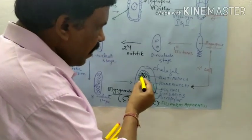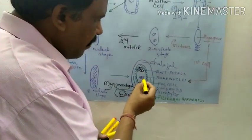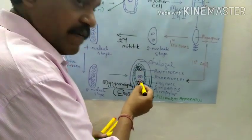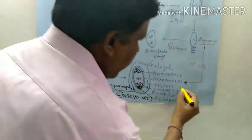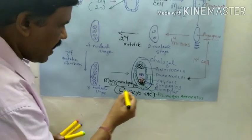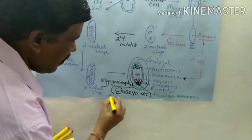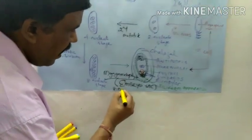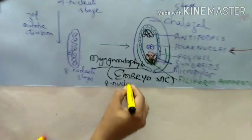How many nuclei do we have? 1, 2, 3, 4, 5, 6, 7, 8 — so it is the 8-nucleate embryo sac. If you see this embryo sac, they are 8-nucleate.